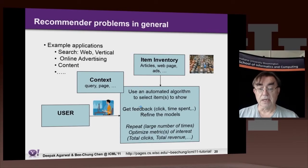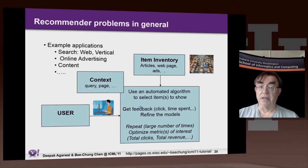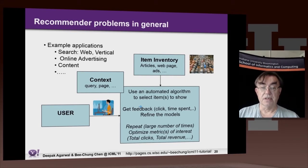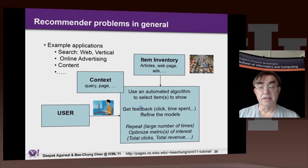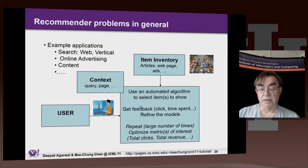This is just another statement of the general problem, which covers online advertising, content of web pages, and such. We have users, we have the context — which is the overall environment — and we have inventory: the set of items we could display, or in the case of Amazon, recommend that people buy. We have these complicated metrics we wish to optimize, which at the simplest are total clicks, but really should be total revenue.